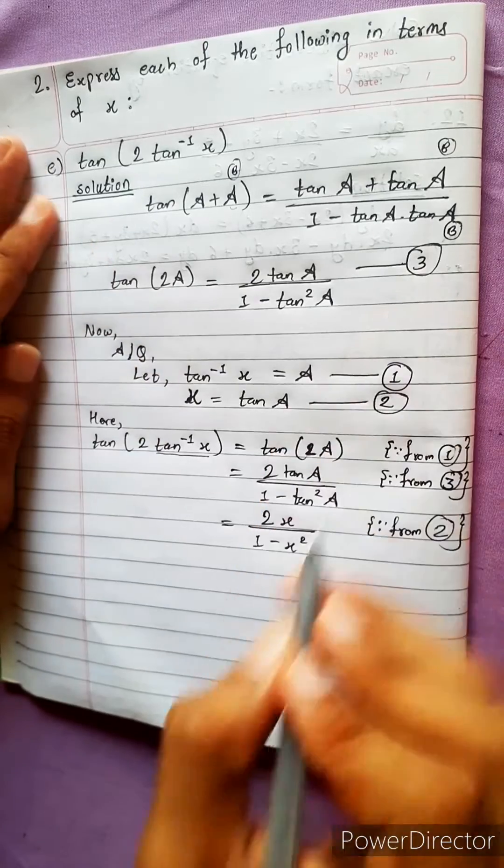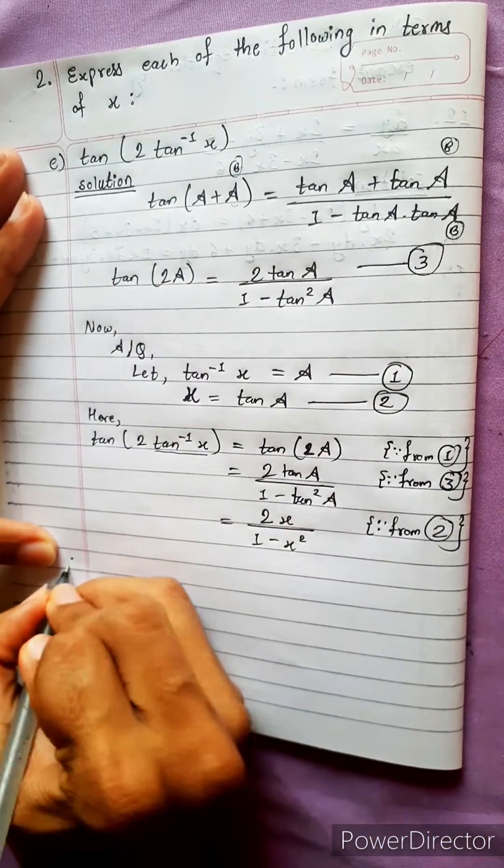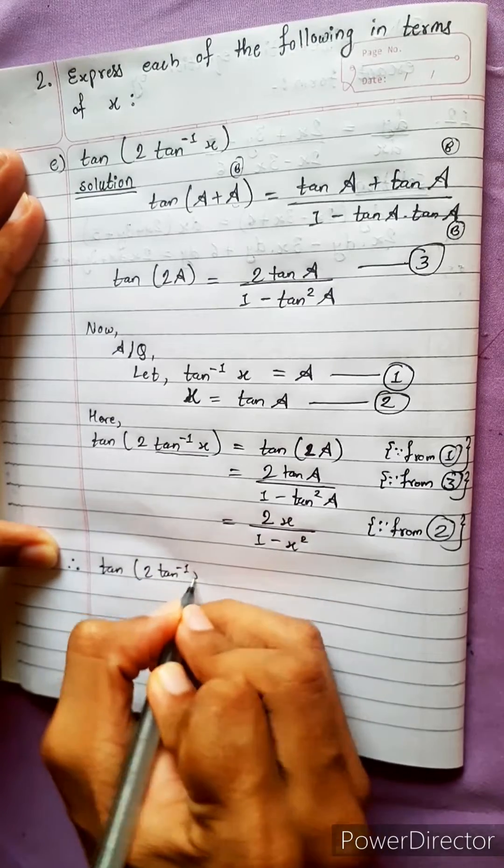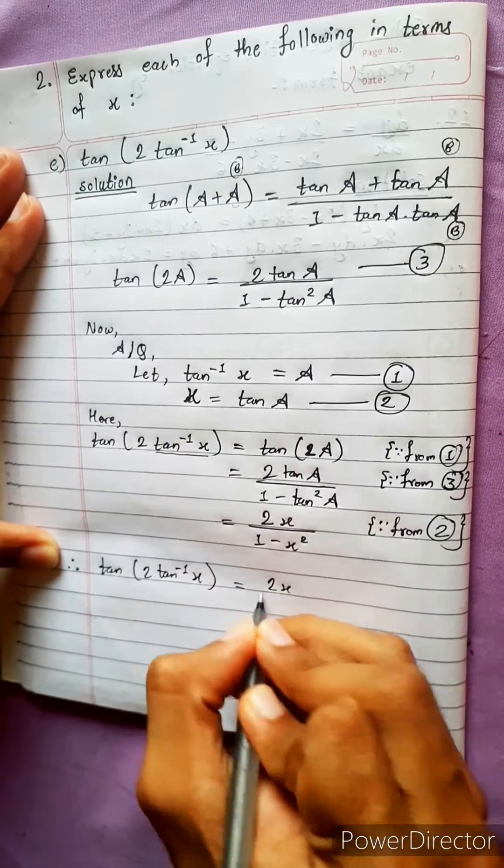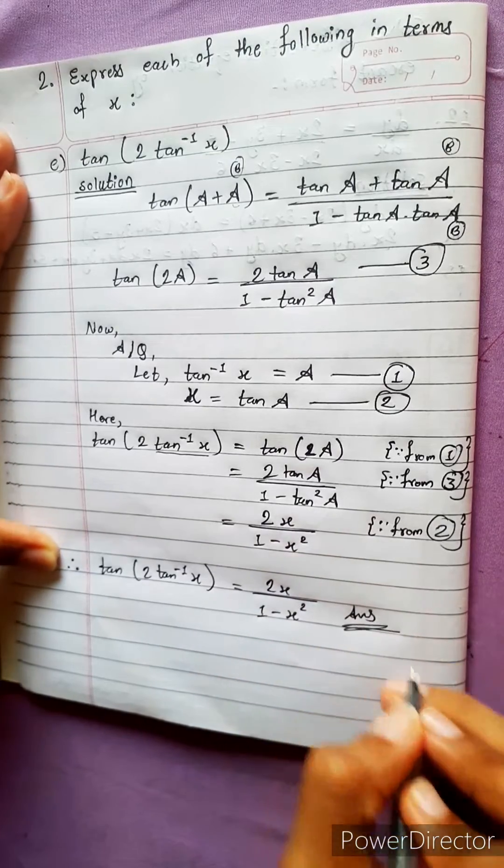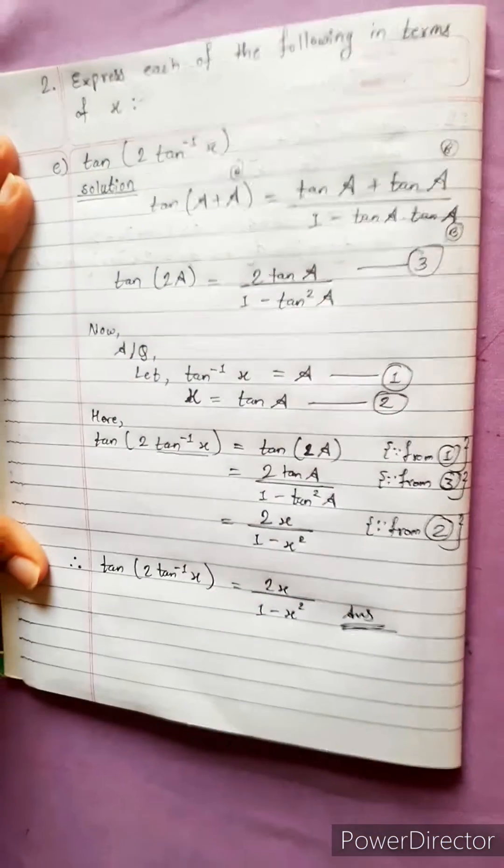Therefore, tan 2 into tan inverse x equals to 2x upon 1 minus x square, answer. Now, be ready for next question. Thank you and bye-bye.